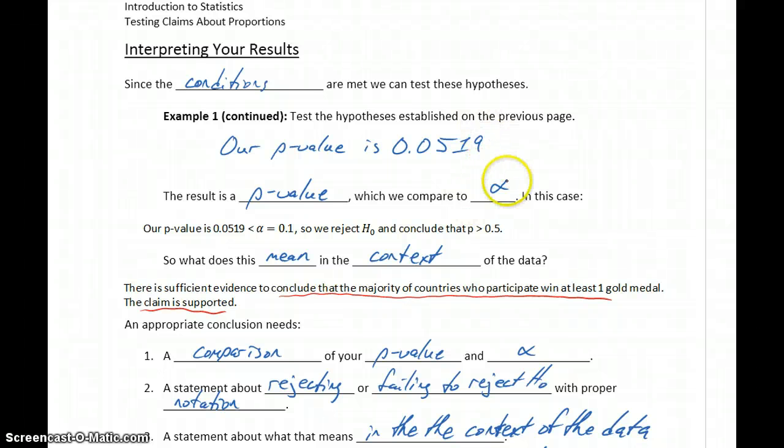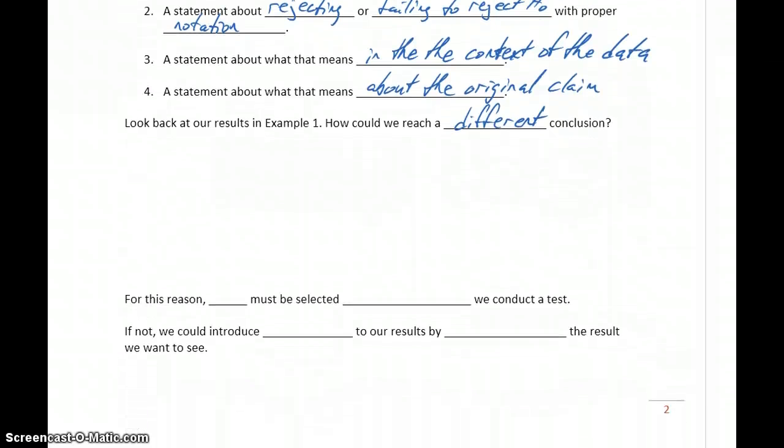But the one thing that we can change, that we have complete control over, is this value for alpha, the significance level. In this problem that was provided to us, and in most problems it will be, but if you're conducting a hypothesis test from scratch, not just answering a question from a classroom, that significance level is something you have to choose.